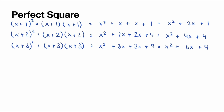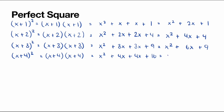And one final example: x plus 4 squared, which is the same thing as x plus 4 multiplied by x plus 4. Using the FOIL technique again, we will get x squared plus 4x plus 4x plus 4 times 4, which is 16. And we can also write this as x squared plus 8x plus 16.